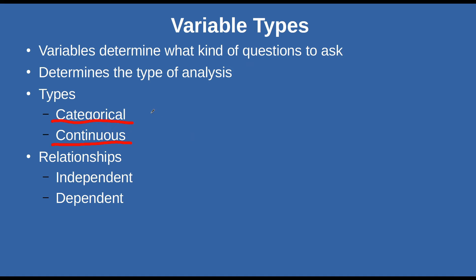For categorical variables, we can do frequency as an example, whereas for continuous, we might calculate the mean. Now, there's also looking at the relationship between variables — an independent variable and a dependent variable. If you're looking at two independent variables and how they move together, you're looking at correlation. This is why it's very important to understand how you're measuring something. One of the most common issues I've encountered is when researchers are not sure how they're going to measure something, which makes it very difficult to shape the kind of questions you can ask and determine the type of statistical tools you can use to produce your answers.